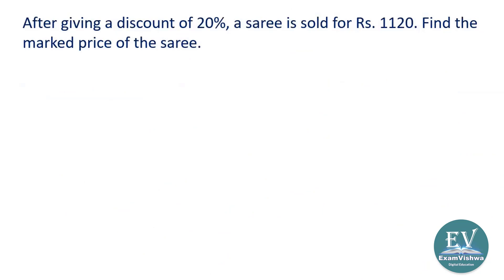Let us try another question. Questions can come in any format, but basically everything is connected with how you apply the relationship between selling price, cost price, discount percent, and discount. There is a ratio to be developed, a relationship to be found. Here is a question: after giving a discount of 20 percent, a saree is sold for 1120 rupees. Find the marked price of the saree.